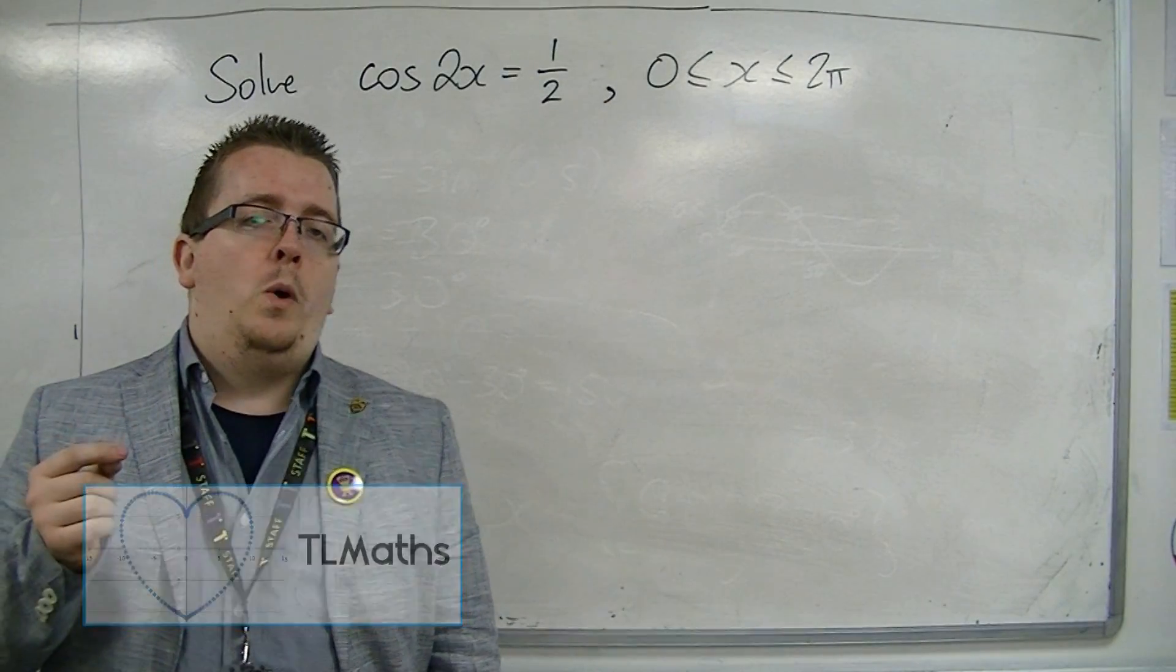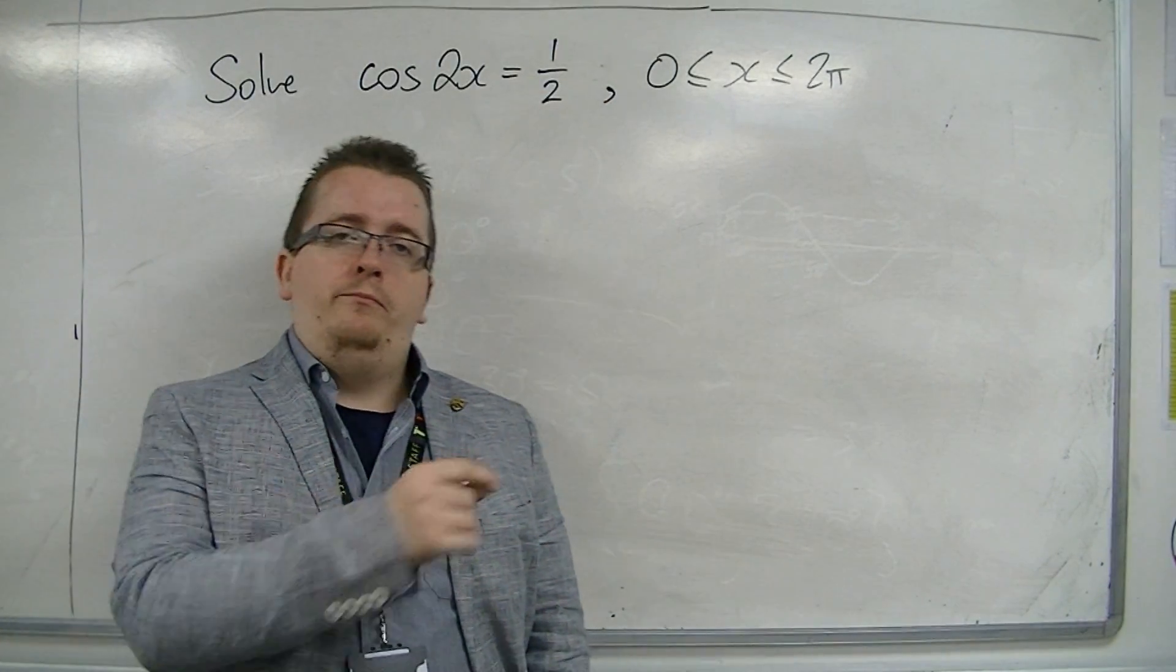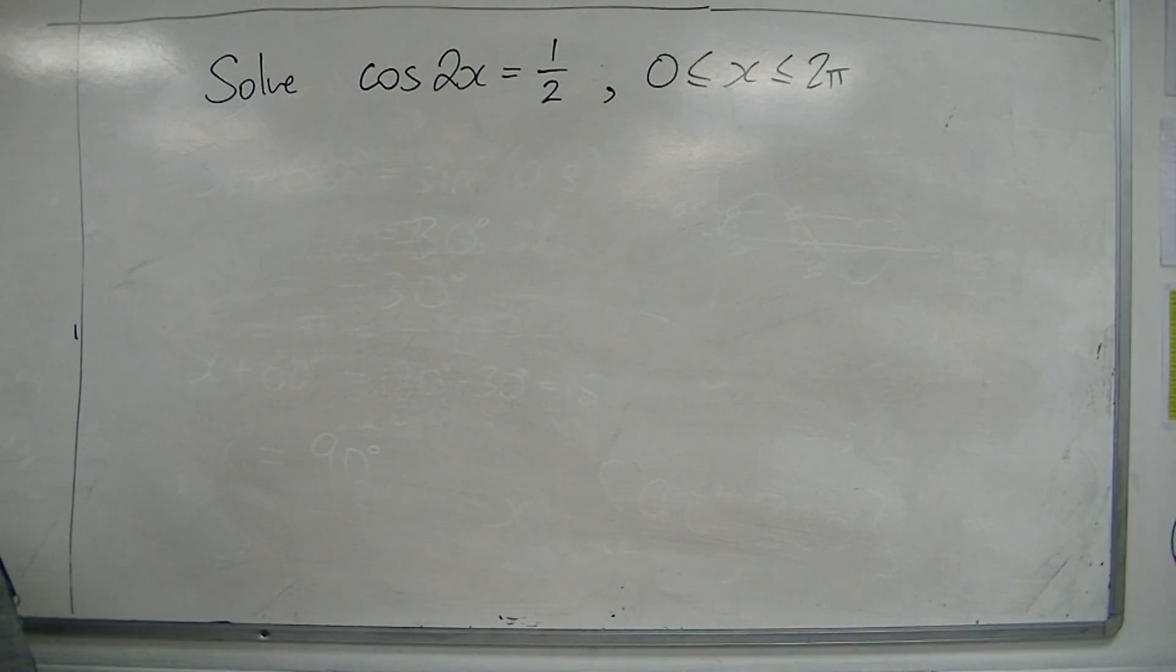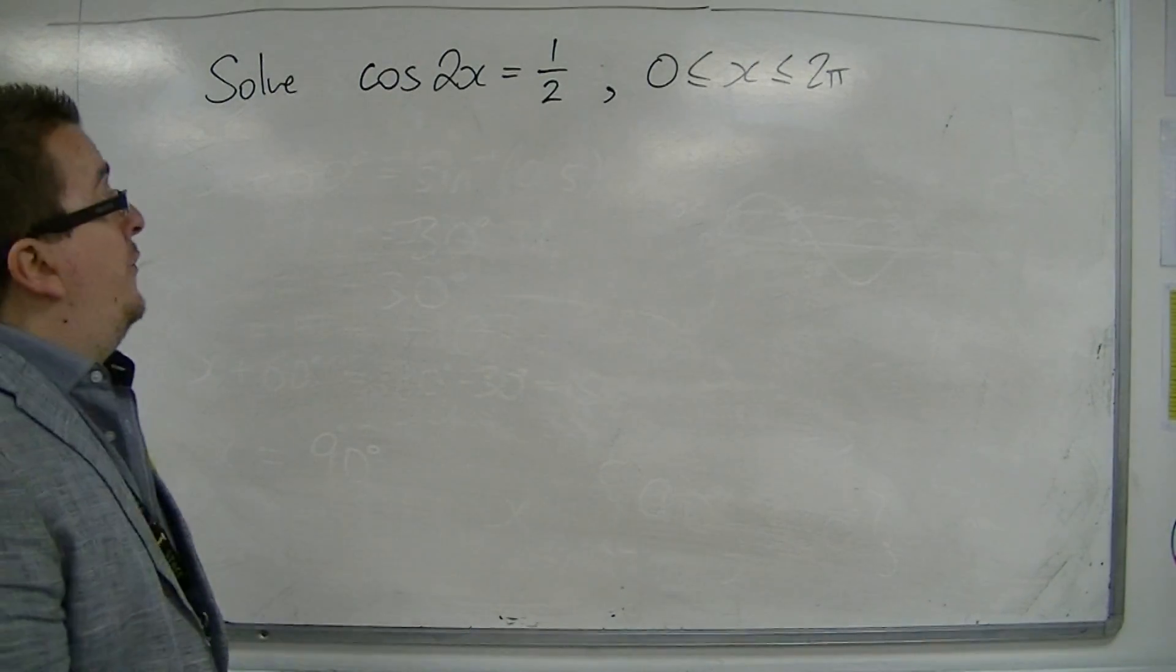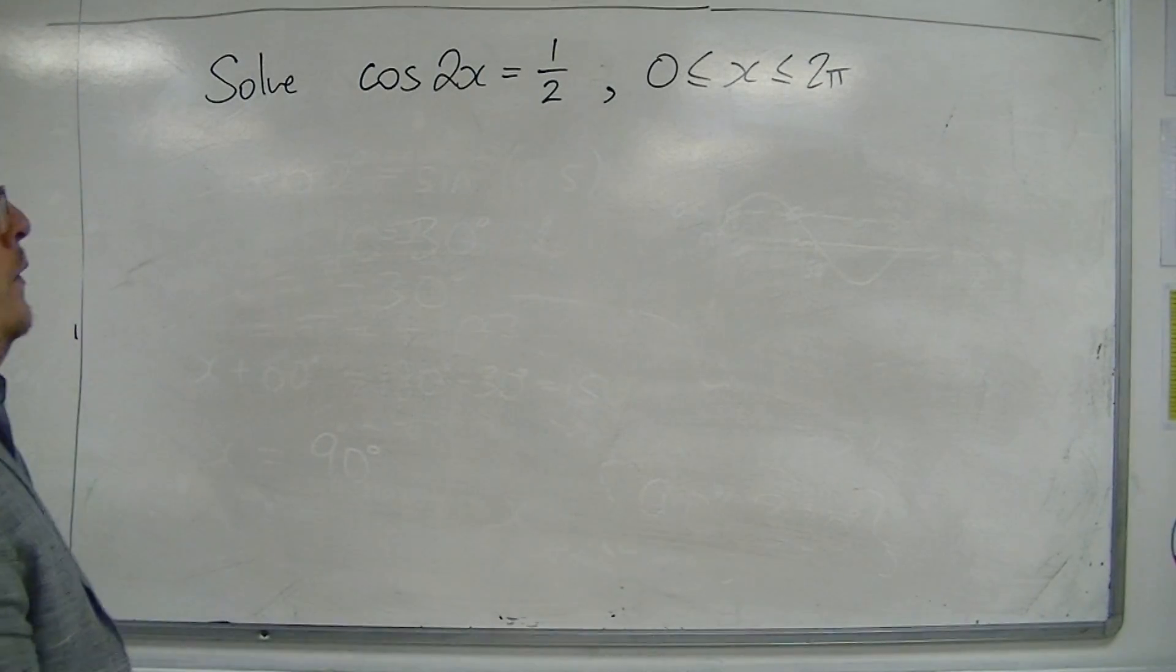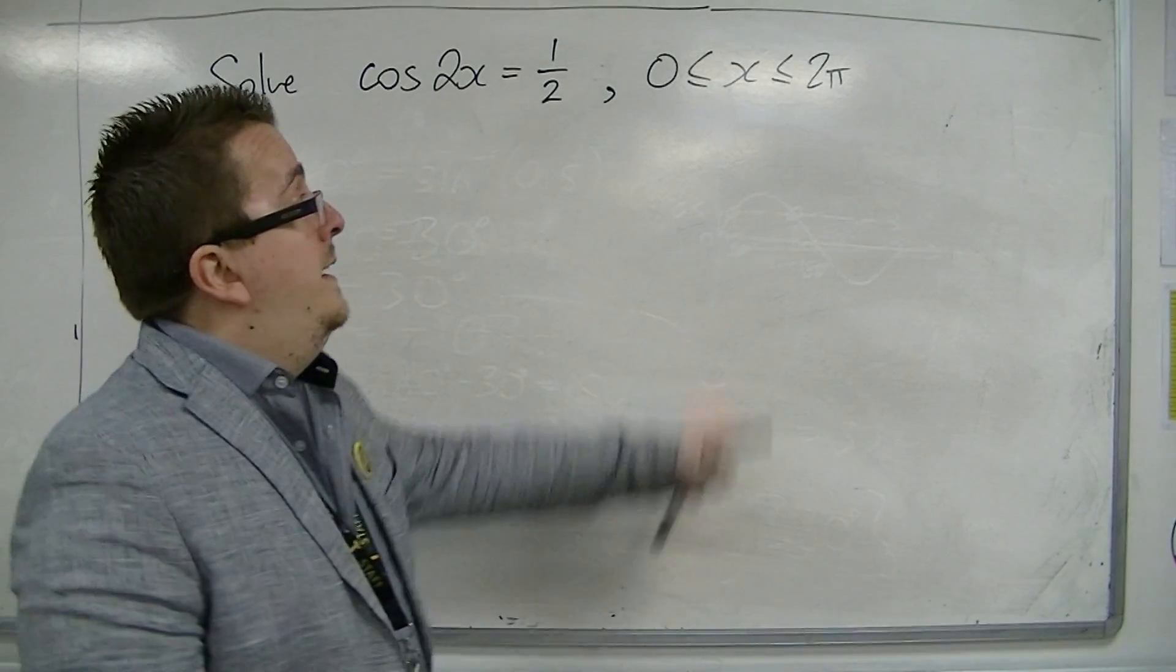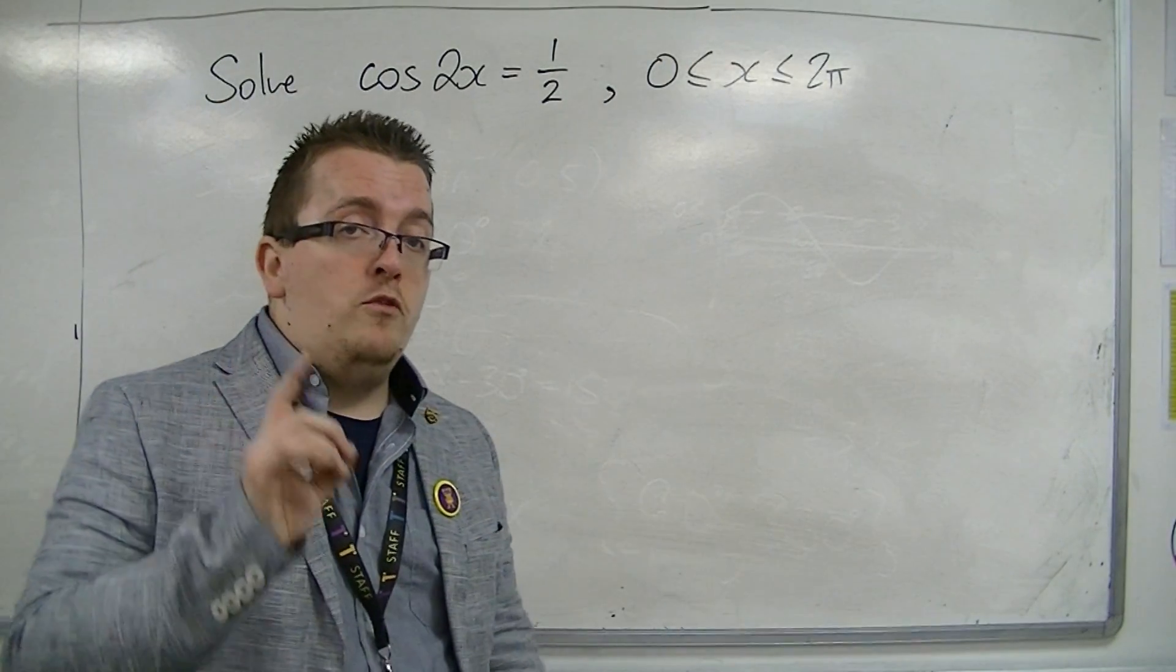This is example 2 in my looking at trickier trigonometric equations. This time we're going to look at cos 2x equals 1 half, where we're looking between 0 and 2 pi. The 0 and 2 pi is key to identifying that we should be in radians.